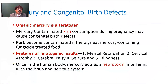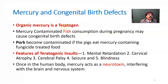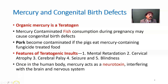Organic mercury is teratogenic — it causes congenital birth defects. Mercury-contaminated fish consumption during pregnancy may cause congenital birth defects. Pork can also become contaminated if pigs eat mercury-containing fungicide-treated food. Features of congenital birth defects include mental irritation, cerebral atrophy, cerebral palsy, seizure, blindness, and also hearing loss.